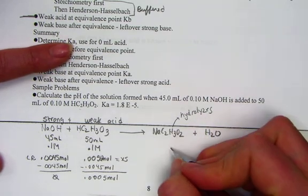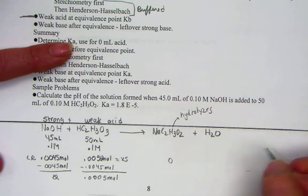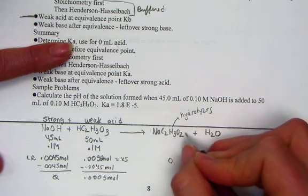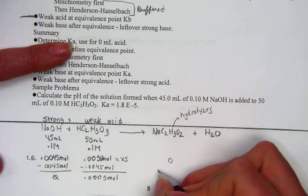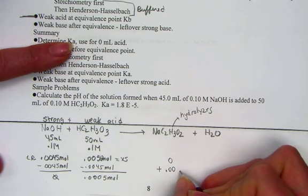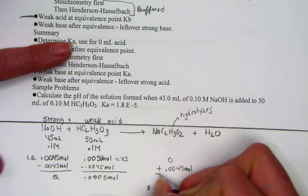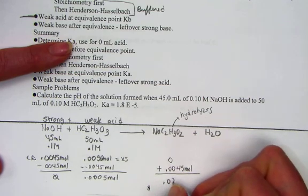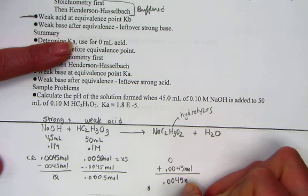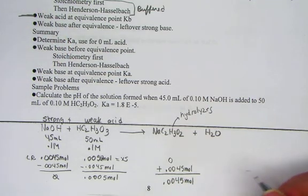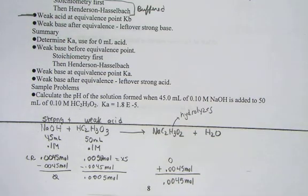So at the beginning of the experiment, there was zero amount of the conjugate base acetate, but it gets produced to the same tune as the base that got used, 0.0045 moles, giving us, after the experiment, 0.0045 moles of the sodium acetate, or the acetate in general.